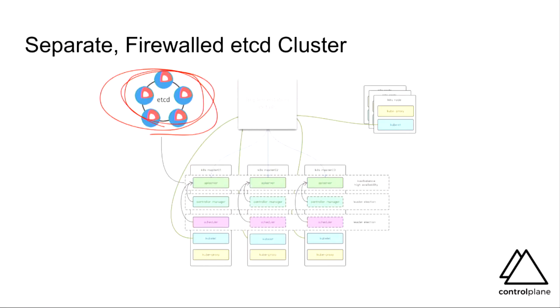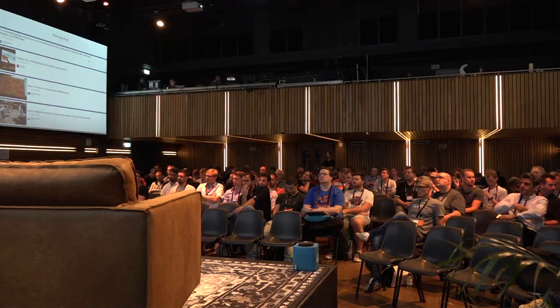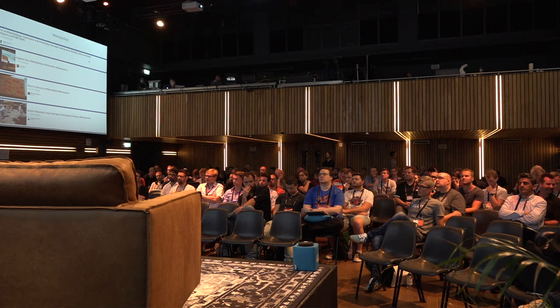That etcd cluster contains the keys to the kingdom — literally everything is stored in there. All state mutations and all read operations go through the API server backed onto etcd. If you were using Calico and kops, for example, until fairly recently you had no option but to allow Calico to talk directly to etcd unencrypted — that is a bad look. They now have a solution called Typha which proxies those requests through to the API server. I would recommend investigation if you find yourself as one of the many people running kops with that configuration.